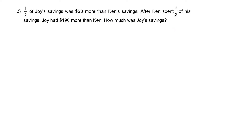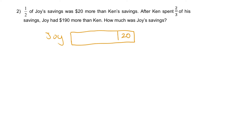Starting with the first sentence: half of Joy's savings. So we have Joy and half of her savings — let's say this is half of her saving, and there will definitely be another half. Half of her saving is $20 more than Ken's. So Ken's savings is this amount here. Half of Joy's saving is $20 more than Ken, and we are done with this sentence.